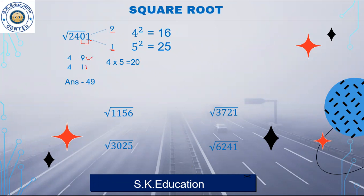So I will write 9 and 1. The second group is 24. Now 4 squared is 16 and 5 squared is 25, so 24 falls between these. So I will take 4, giving possible answers 49 and 41. Let me check: 4 multiplied by 5 is 20, and 20 is less than 24. Since 24 is the bigger number, I will take the bigger answer. So 49 is your answer.